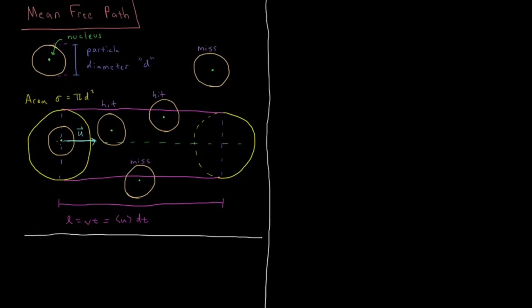We're going to set up the following situation. We're going to have our particle traveling with a velocity u in this direction, and as it does so it's going to be sweeping out a cylinder. The diameter of this cylinder is twice the diameter of the particle, so it has this cross section and is sweeping out this cylinder as drawn here.